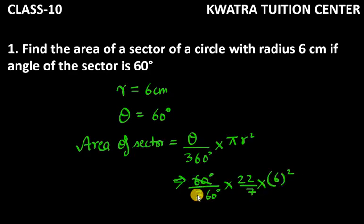So 60 and 360 को cut कर दो. 1 by 6 आजाएगा और 2 6 हमारे पास उपर हैं. 1 6 को cancel कर देंगे. So what's left? 22 into 6 over 7.